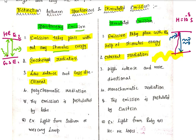Spontaneous emission produces low-intensity and less-directional light — it is like a normal source of light, and its directional property is not very strong. Stimulated emission, on the other hand — that means laser — is highly directional.